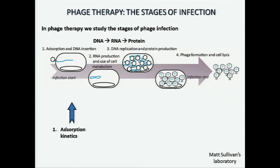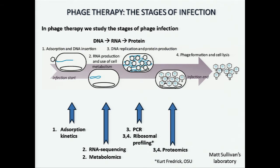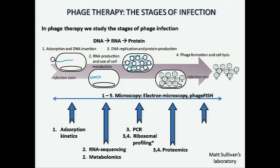The first stage of infection is adsorption, which we study with adsorption kinetics. During the second stage, phage DNA makes RNA, which in turn makes proteins that carry out most cell functions — we study this with RNA sequencing. Also during this stage, the phage uses the pathogen's metabolism for its own multiplication, which we study with metabolomics. During the third and fourth stages, phage DNA replicates and phage proteins are produced — studied with PCR, ribosomal profiling, or proteomics. The final stage is cell lysis, when the phage breaks open the cell, which we study with microscopy — a technique that also helps investigate the other stages of the infection cycle.